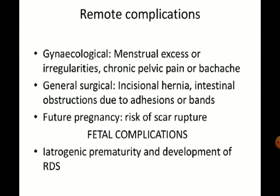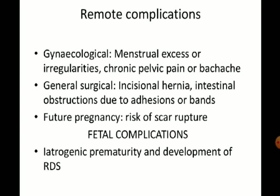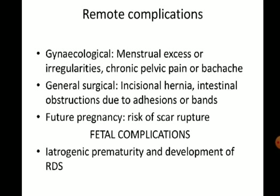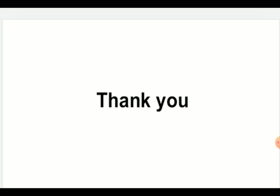Remote complications occurring six or more weeks later include: menstrual irregularity, chronic pelvic pain, backache, surgical complications like incisional hernia, intestinal obstruction due to adhesions, and in future pregnancies, risk of scar rupture. Fetal complications include iatrogenic prematurity and development of respiratory distress syndrome (RDS). This concludes our overview of lower segment caesarean section.